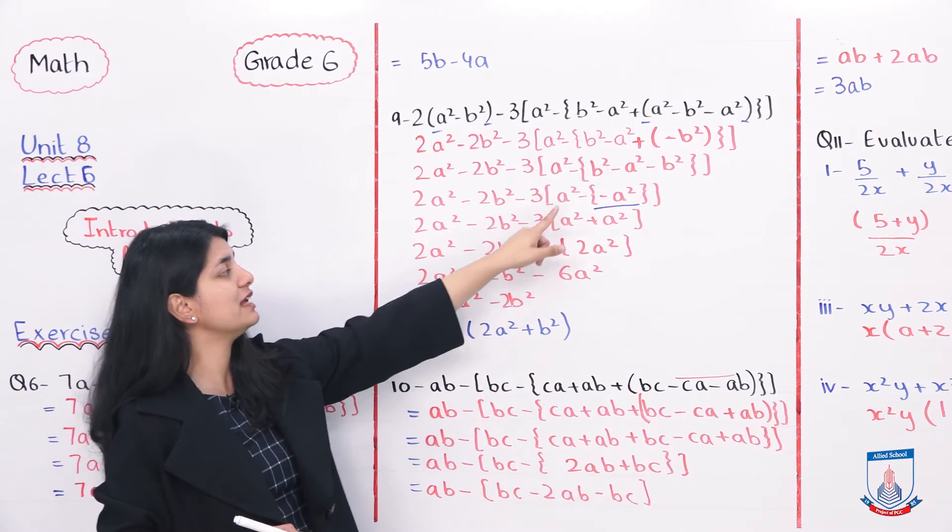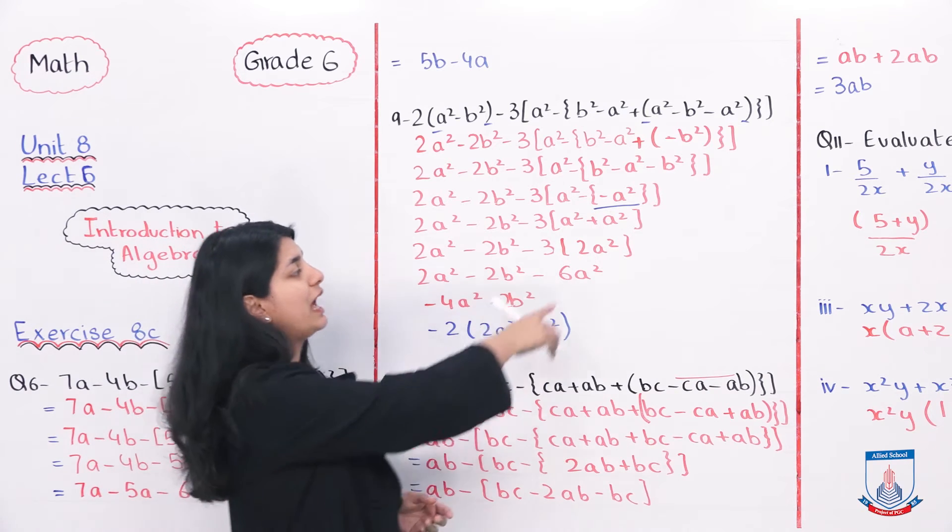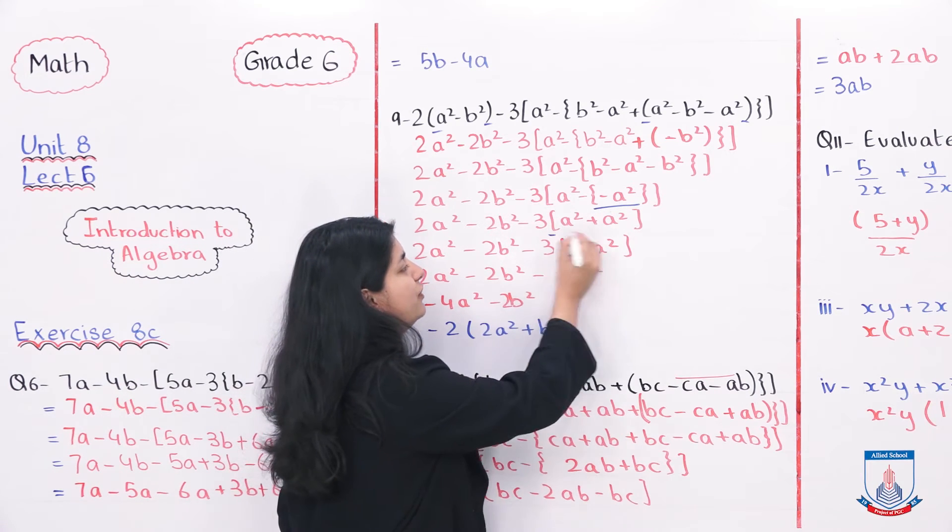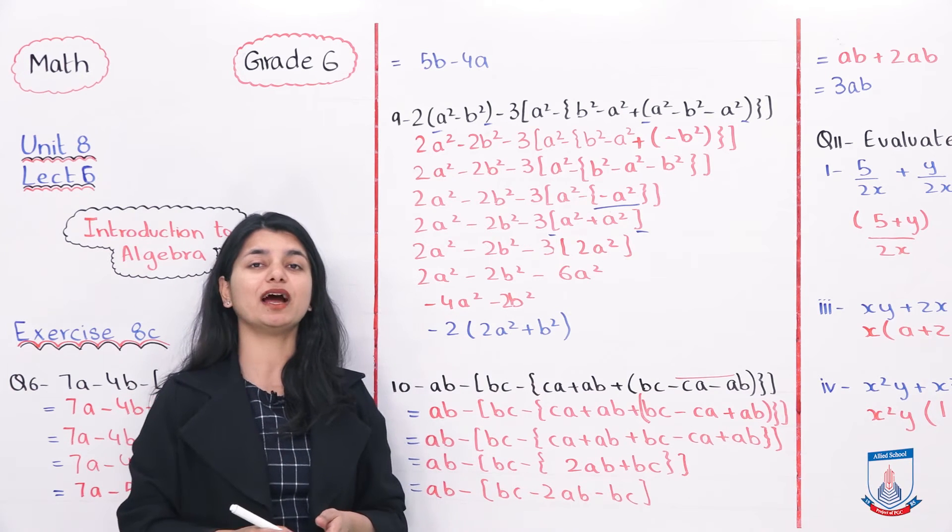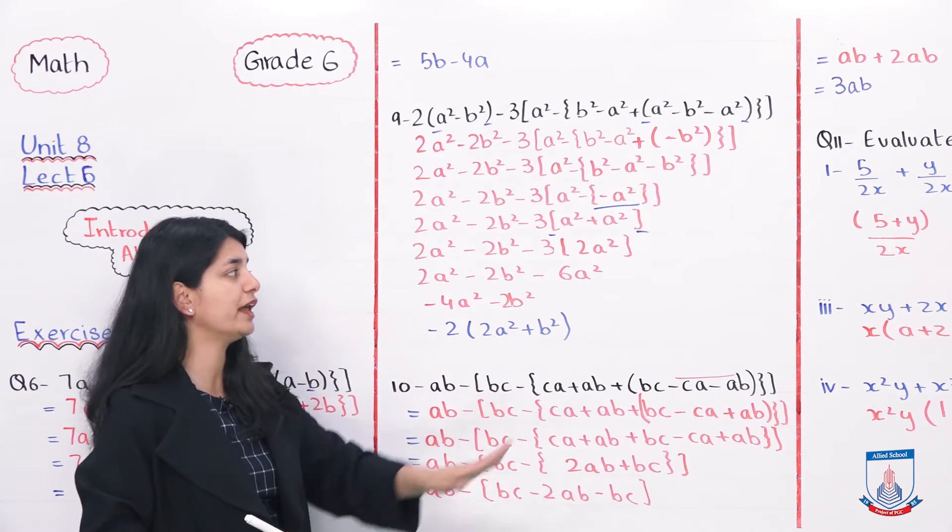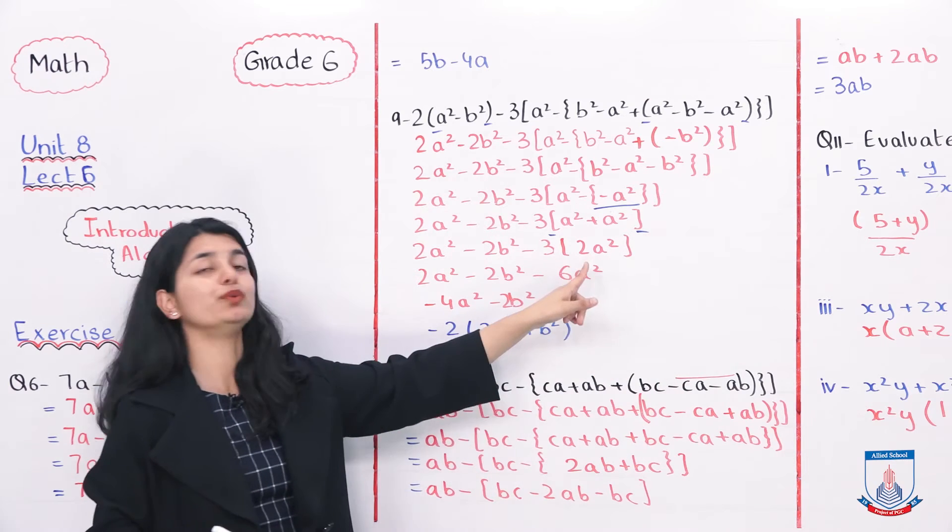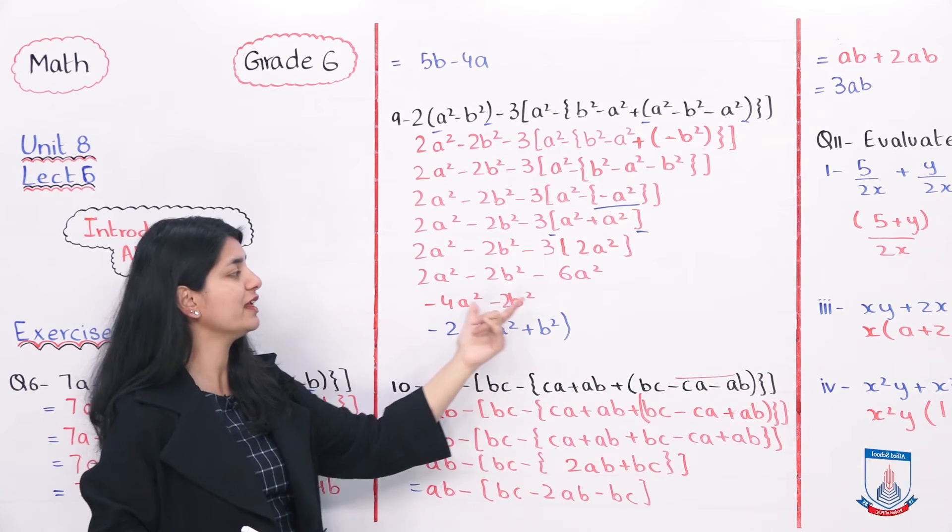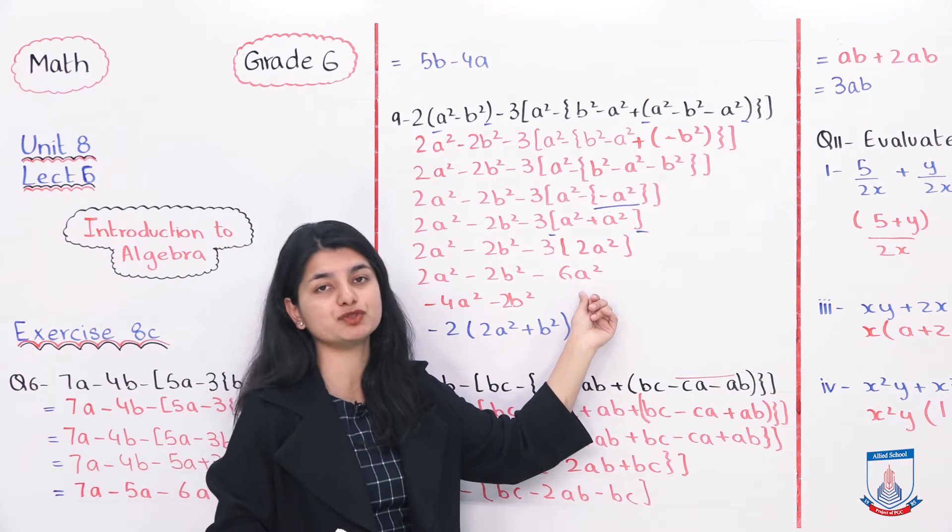So what you are going to do is, aapne iske baahir wale minus se andar wale minus A square ko multiply karna hai, and that becomes plus A square. To ab aapka bracket rehne gaya hai, this bracket right here, aur uske andar aagya hai A square plus A square. A square plus A square kya hote hai? It is 2A square. Ab aapke bracket ke andar sirf 2A square hai, usse baahir minus 3 hai. That means you have to multiply them. 3 into 2 is 6. To humara paas aajayega minus 6A square.